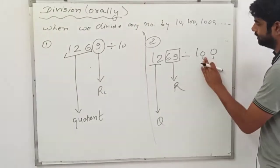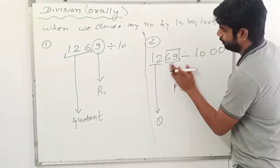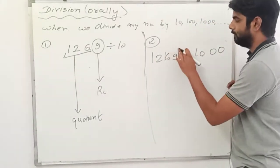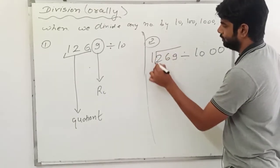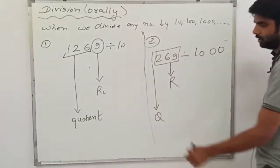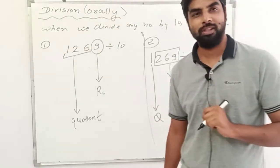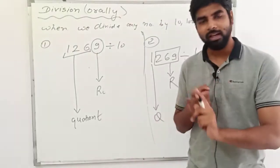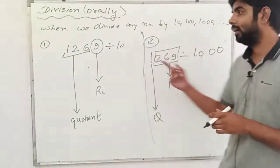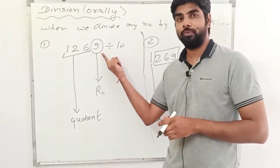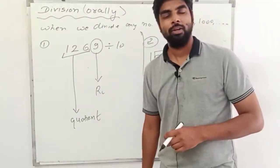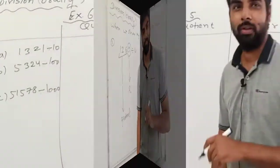Suppose the question is 1269 divided by 1000. In 1000 there are three zeros, so we take three digits from the right — 269 — and that becomes our remainder, and only 1 is left, which becomes our quotient. This is how you can solve any question orally whenever you are dividing by 10, 100, 1000, 10,000, lakh, 10 lakh, or whatever — just count the zeros, take that many digits from the right as the remainder, and the rest becomes the quotient.